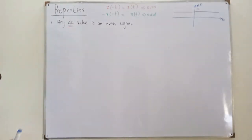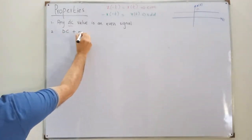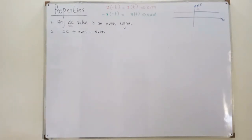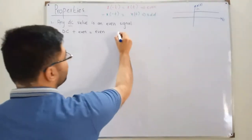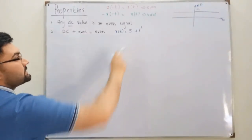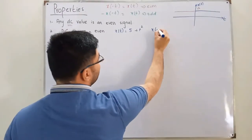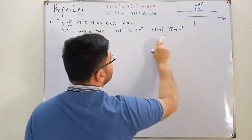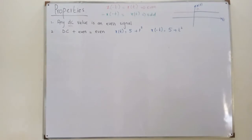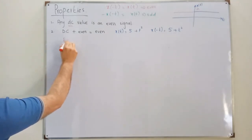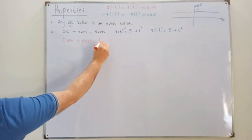The second property: DC plus an even signal is an even signal. Let's say we have X(t) = 5 + t². Here 5 is the DC value and t² is even. If you time-reverse it, X(-t) = 5 + (-t)² = 5 + t², which equals X(t). So this is an even signal. From this we can also derive that even plus even is also an even signal.